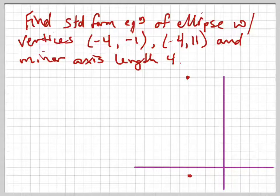And then it says minor axis of length 4. All right, well, first of all, if we know these two vertices are here, and it's an ellipse, we know that in between them,